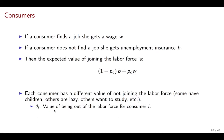We denote by theta_i the value of being out of the labor force for consumer i, so each consumer has a different value of joining. When you join the labor force, you get the chance of finding a job with probability PC or getting unemployment benefits with probability 1-PC. The opportunity cost of this option is not receiving the value of staying out of the labor force. So the decision of whether or not to join depends on how the consumer ranks theta_i against the expected value of joining.